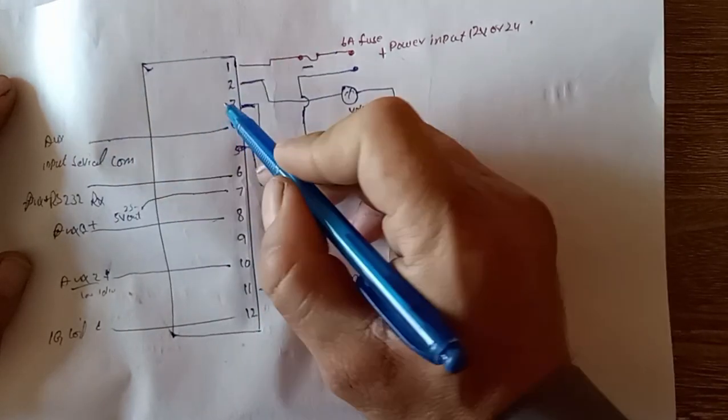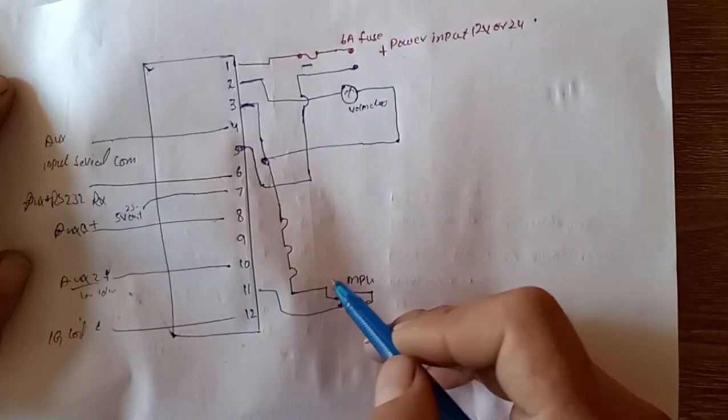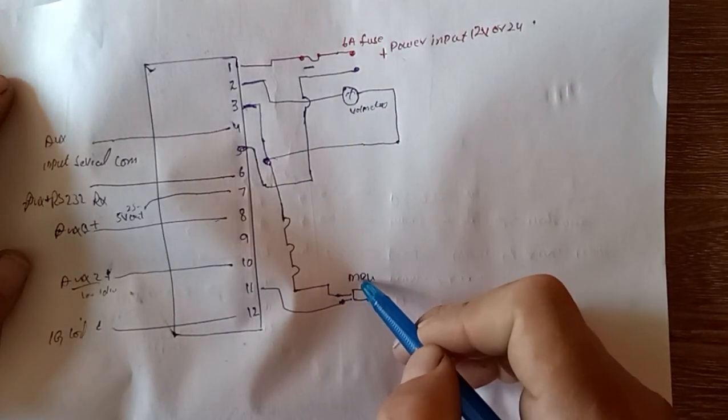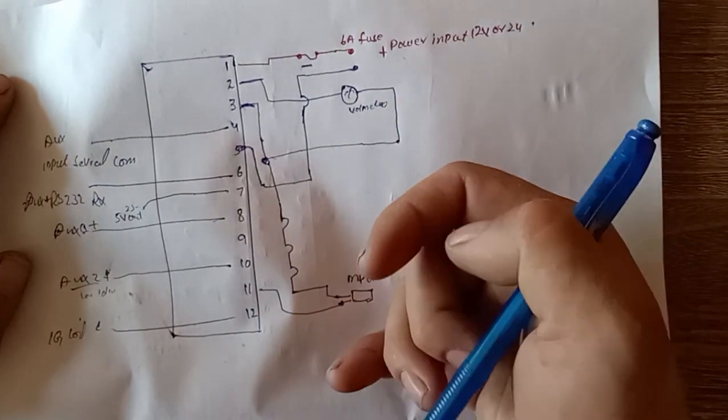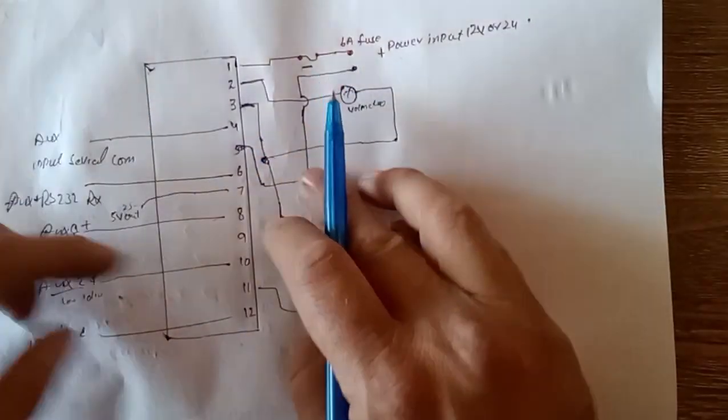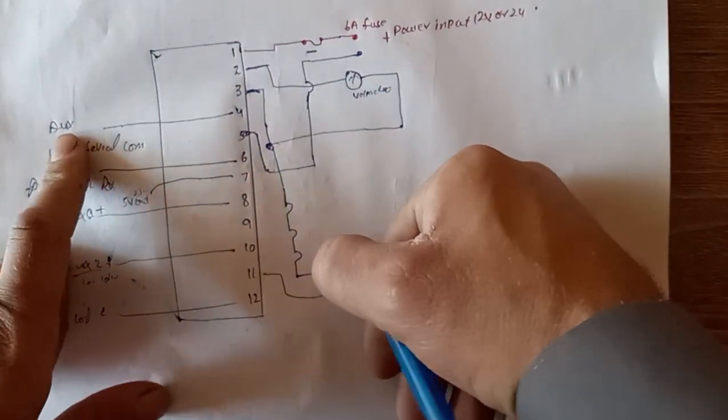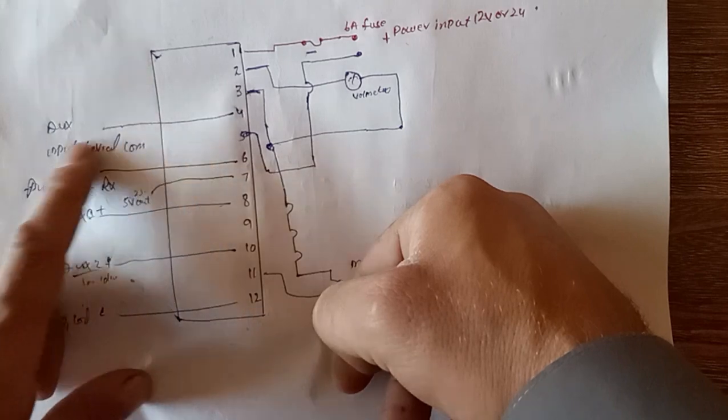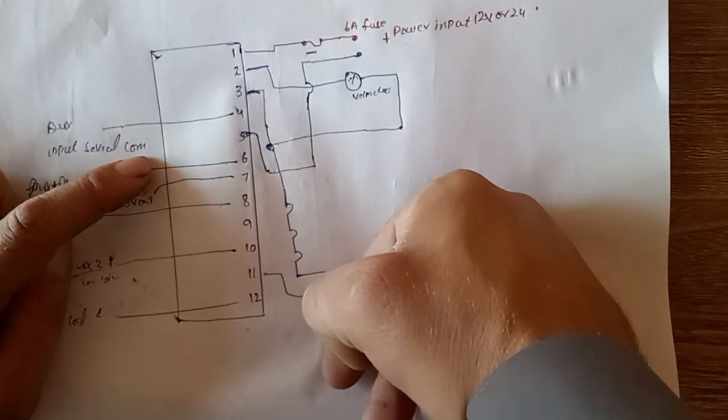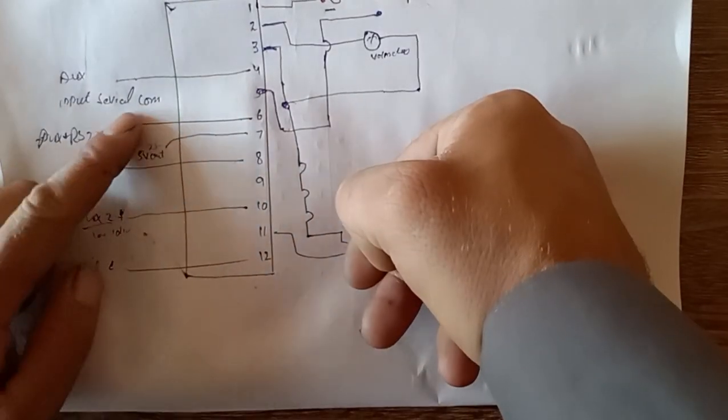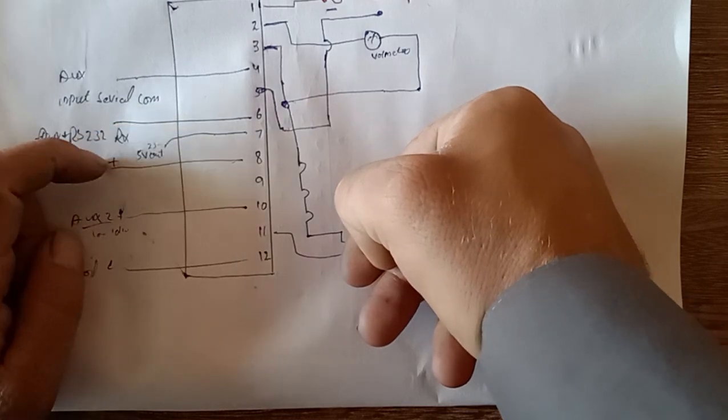Pin number three is outgoing to MPU one side. MPU has two output wires. After that, as you can see here, four number is auxiliary input, serial common. This is useful for serial communication for programming.